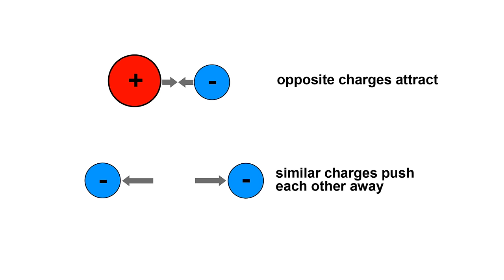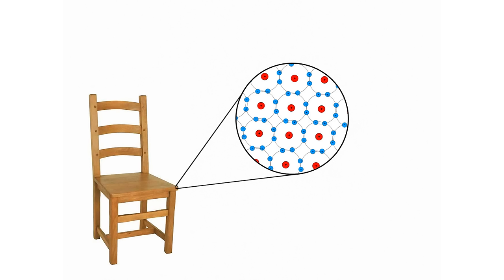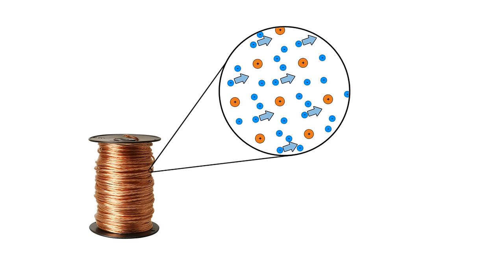So the positive nucleus of the atom will attract negative electrons, but if electrons get too close to each other they'll push each other away. In most solid materials the atoms and their electrons just sit there and don't really move around. But in metals, like copper, the electrons have the ability to move around.